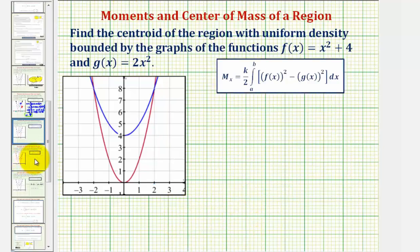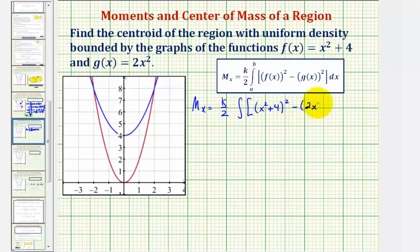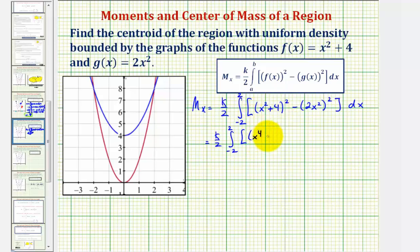Next we'll find the moment about the x-axis: k/2 times the integral of [f(x)]² minus [g(x)]², which is (x² + 4)² minus (2x²)², from negative two to two. Squaring (x² + 4) gives x⁴ + 8x² + 16, and squaring 2x² gives 4x⁴.